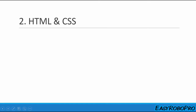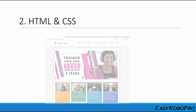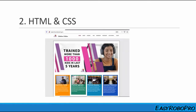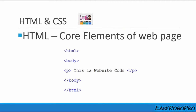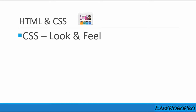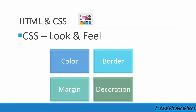At position 2, we have HTML and CSS. Both are used to build websites like Facebook, Twitter, MakeMyTrip, and any other website you see today on the internet. HTML stands for Hypertext Markup Language, which is used to build the core elements of any web page. CSS stands for Cascading Style Sheet, which gives look and feel to any website — be it color, border, margin, decoration, or similar styles.